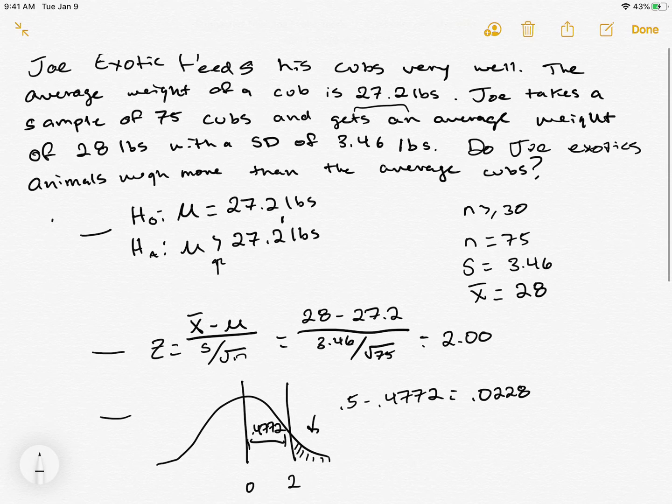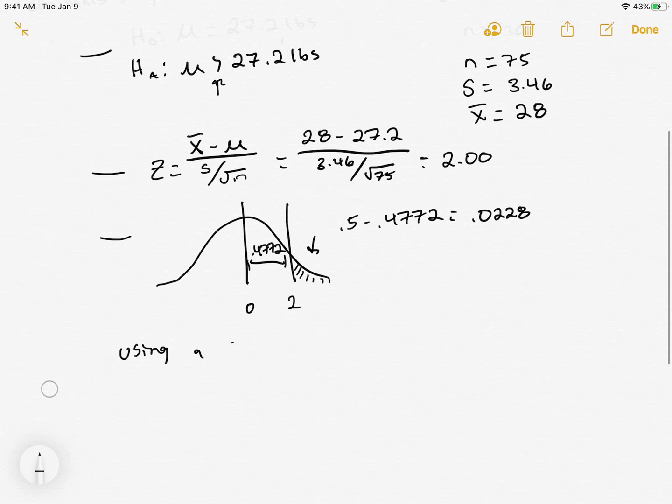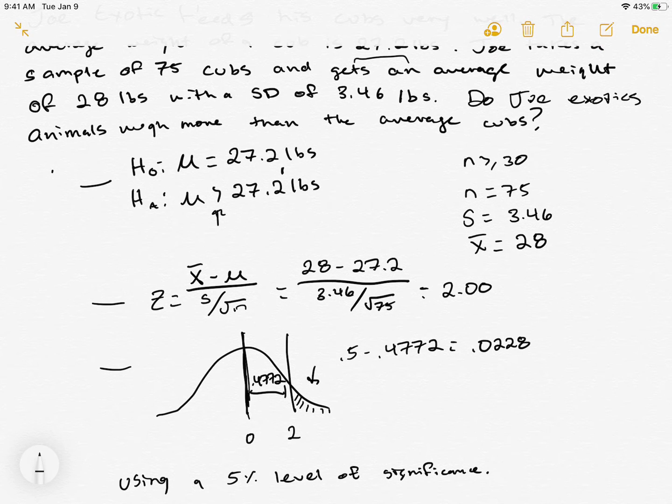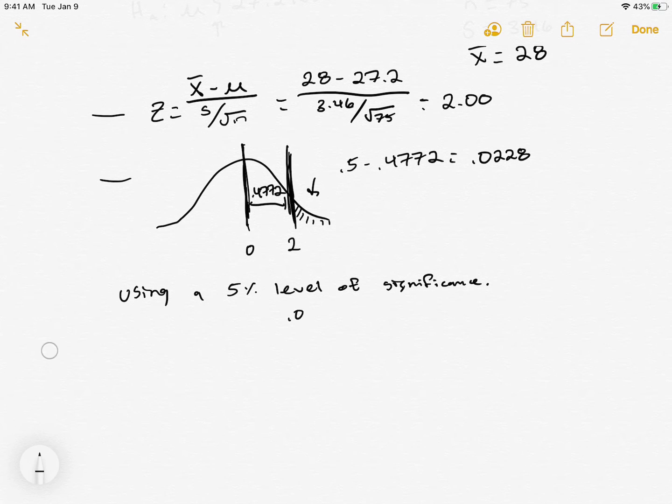So that's our p-value. I didn't make a level of significance because I apparently don't write good questions. But let's say using a 5% level of significance, we'd say do Joe's Tigers weigh more on average is what we're looking at. What this is saying - just an interpretation - is if that null hypothesis were to be true, if Joe's Tigers really did weigh 27.2 pounds on average, the probability that we'd take a sample of size 75 and get an X-bar of 28, the probability that that would happen is really small. It's like a 2% chance. And so what we end up saying is, that's probably not by chance.